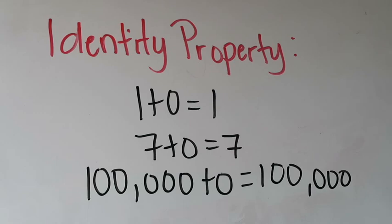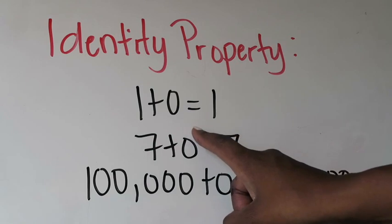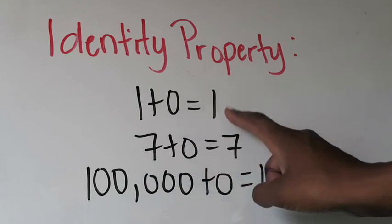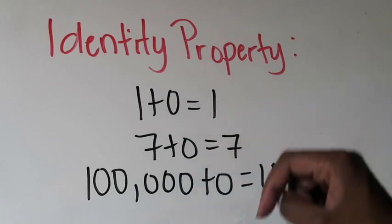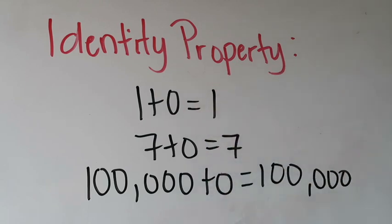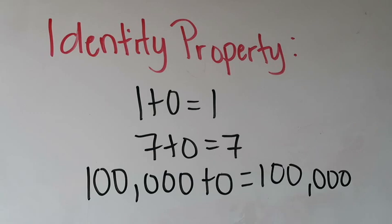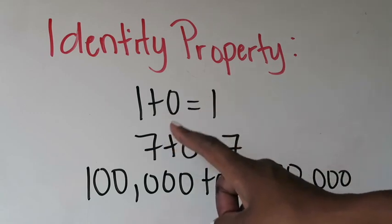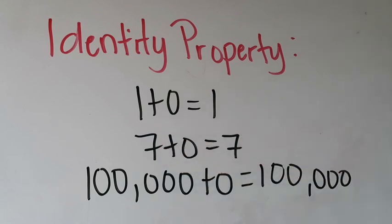So this property says anytime I add a number such as one plus zero, my answer is always going to be the same as that number. So one plus zero will equal one because I'm adding zero to it. If I do seven plus zero, the identity property tells me that my sum would be seven because anytime you take a number and add zero to it, the sum will be that same number.